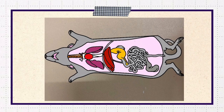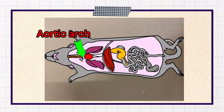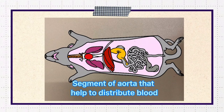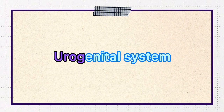Let's take a look at the circulatory system. There is the liver, heart, and aortic arch. The aortic arch is the segment of the aorta that helps distribute blood to the head and upper extremities.